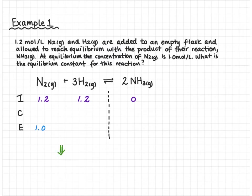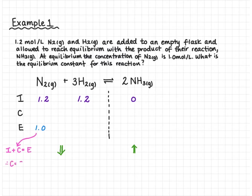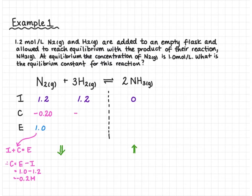The change in our reactants was negative, so the change for our products has to be positive. The initial concentration plus the change equals our equilibrium concentration, so we rearrange to solve for change: equilibrium minus initial gives a change of negative 0.2 moles per liter for N2. The sign of our change in hydrogen is also negative, and the sign of our change in ammonia is positive. Hydrogen has a coefficient of 3 and nitrogen has 1, so the magnitude of change is three times as big for hydrogen.